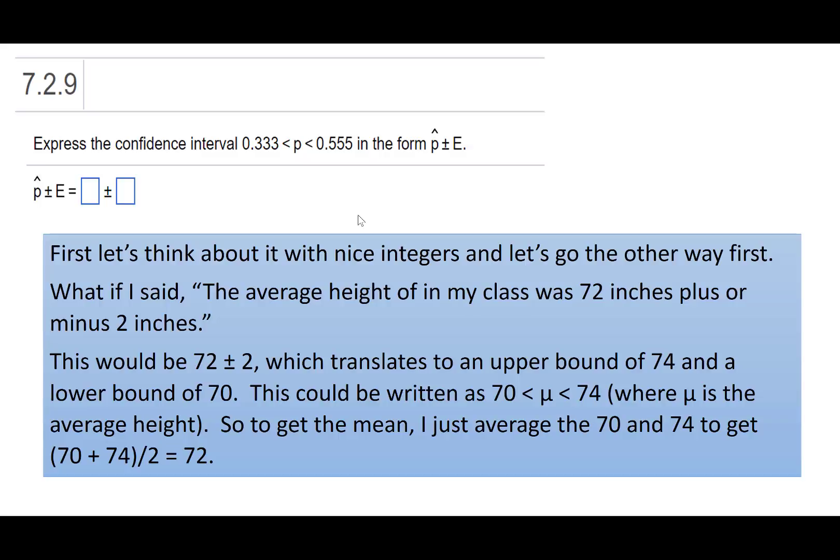Where μ is the average height. So to get the mean, I just average the 70 and 74. I say 70 plus 74 divided by 2. That's 72 because the mean is what's right in the middle. So when we're looking for this p hat, that is right in the middle of my interval.